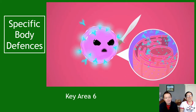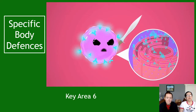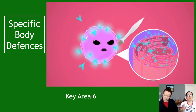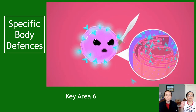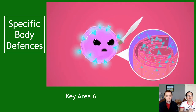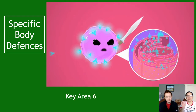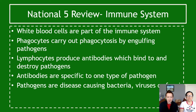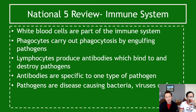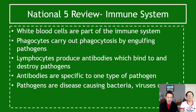Welcome to key area six: specific body defenses of unit three, neurobiology and immunology. This is our second section on immunology — last time was non-specific body defenses, this is specific body defenses. The main message is that it's your immune system learning to kill one specific pathogen. We're focusing on lymphocytes, the idea of lymphocytes producing antibodies that bind to pathogens and are specific to one type of pathogen — hence specific immune response.